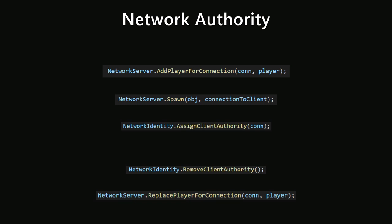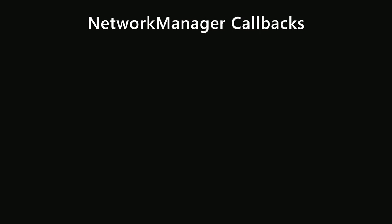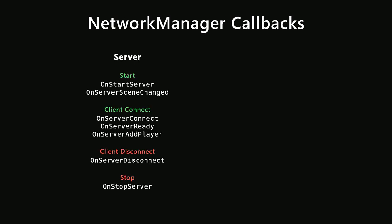Let's run through the callbacks so you get an idea of what's available — all of this is in the API reference so there's no need to memorize any of this. For the network manager on the server, we have OnStartServer and OnServerSceneChanged, related to when the server starts or the scene changes. We have OnServerConnect, OnServerReady, and OnServerAddPlayer, related to when a client connects, is ready, and when the player object is spawned. And we have OnServerDisconnect and OnStopServer, related to when a client disconnects and when the server stops.